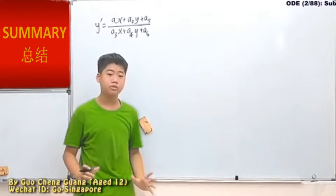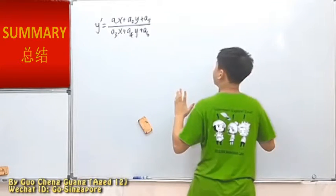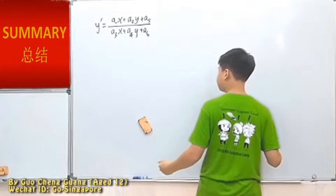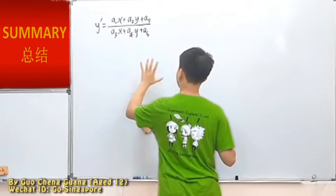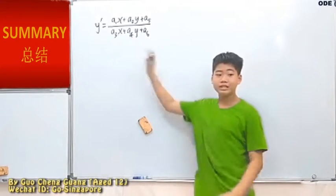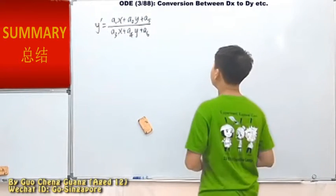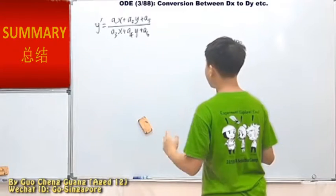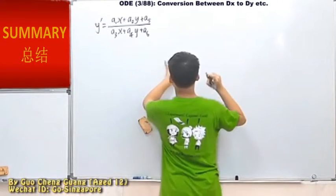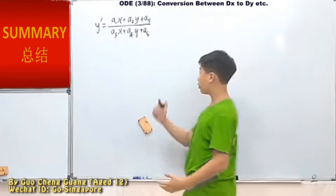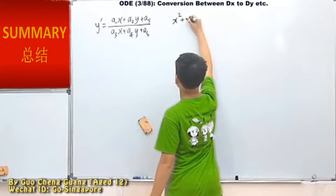I'll explain the type of substitution later. Right now, we need to revise about something else before we can move on to this type of substitution. For the type of substitution we are going to use, we need to know about completing the square first.